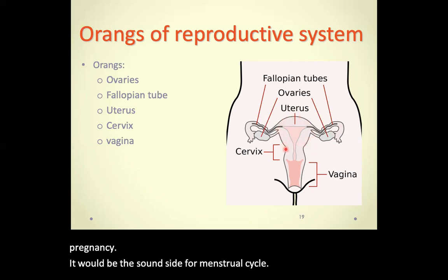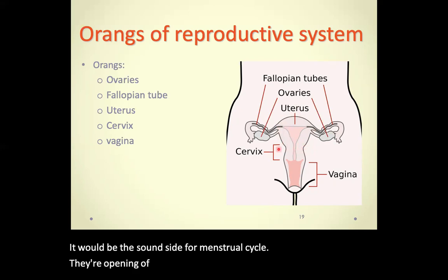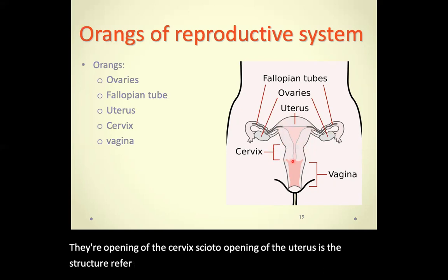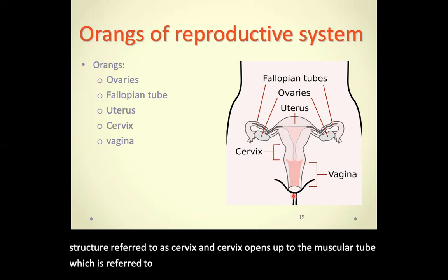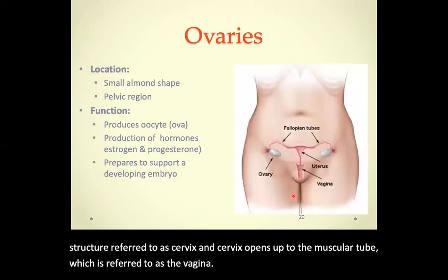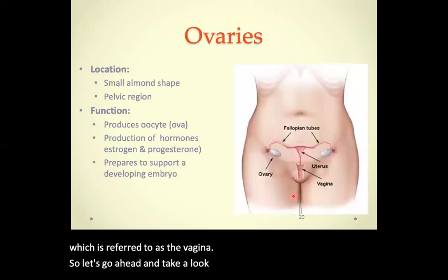If there is no pregnancy, the uterus is the site for the menstrual cycle. The opening of the uterus is the structure referred to as the cervix, and the cervix opens up to the muscular tube referred to as the vagina. Let's take a look at each of these structures one at a time.